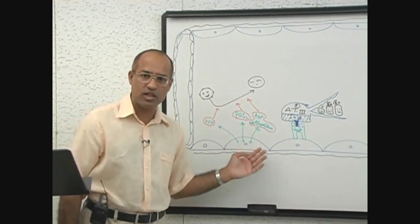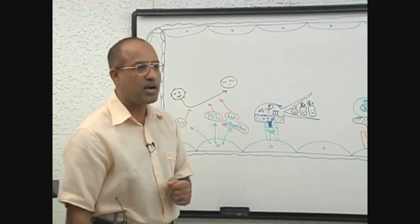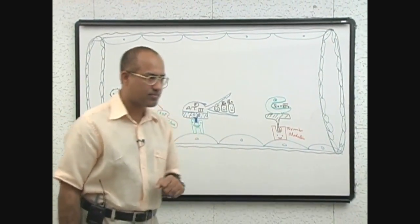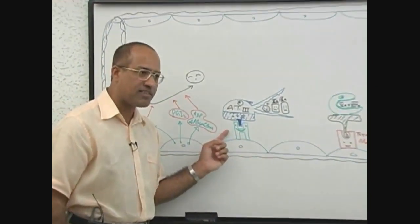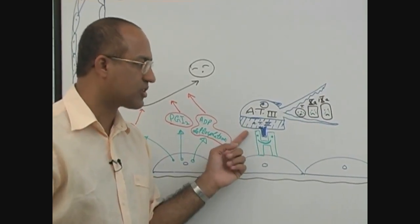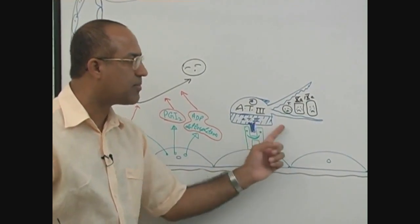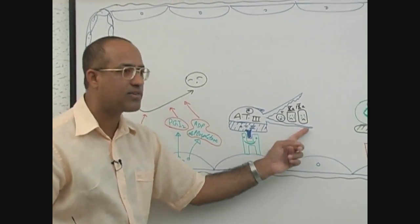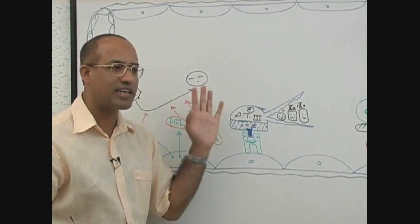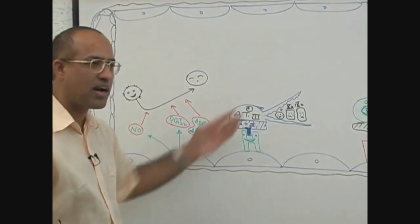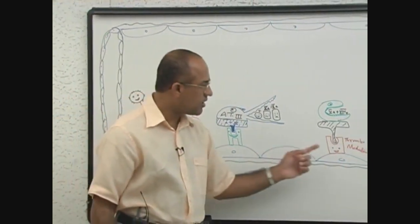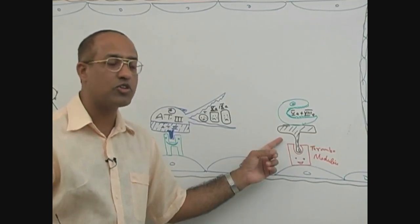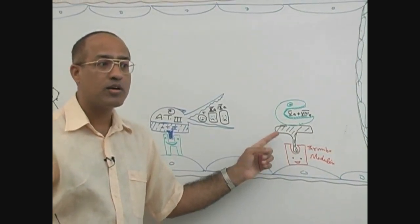Not only does healthy endothelium prevent platelet aggregation, but healthy endothelium also inhibits the proteins involved in the coagulation process. Healthy endothelium expresses heparan sulfate, which binds antithrombin-3, and once antithrombin-3 binds with heparan sulfate it becomes activated and catabolizes or inactivates thrombin, activated factor 10, and activated factor 9 — all of them are inactivated. Then thrombomodulin, expressed by healthy endothelium, can bind thrombin — which is normally a pro-coagulant molecule.